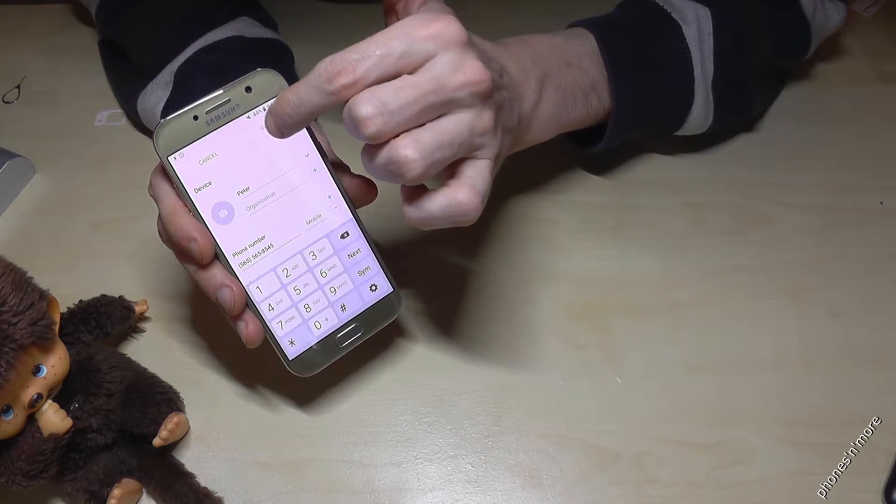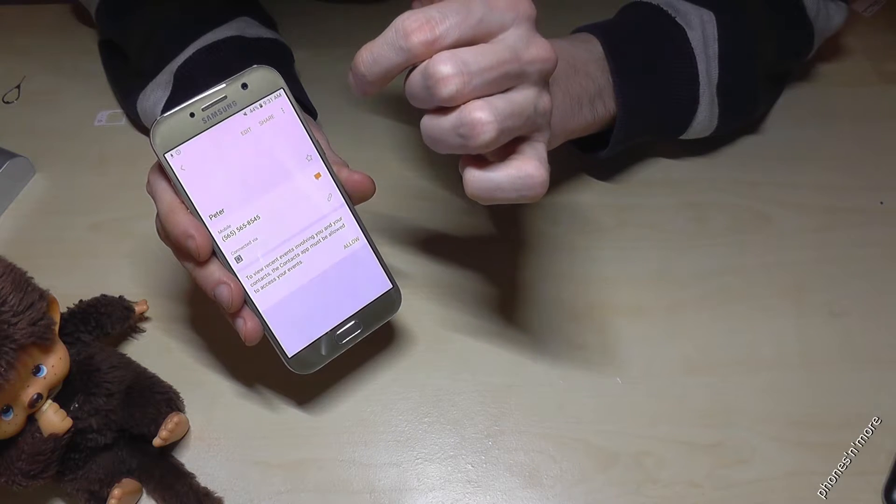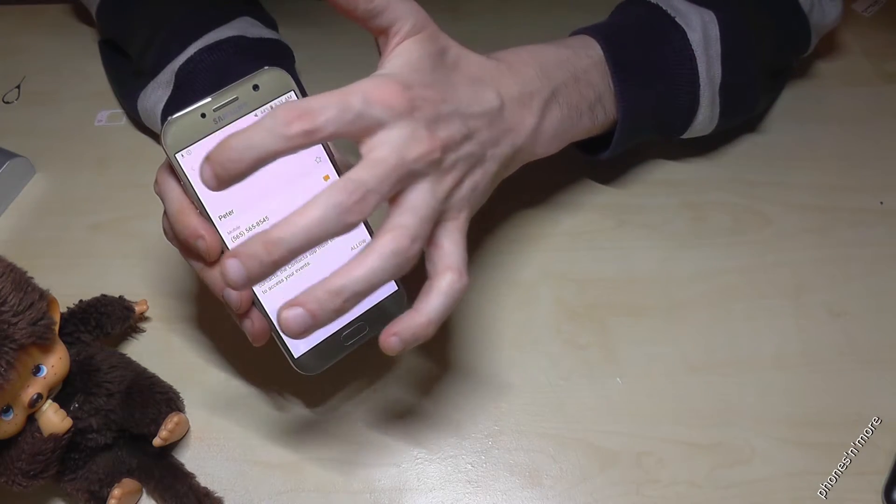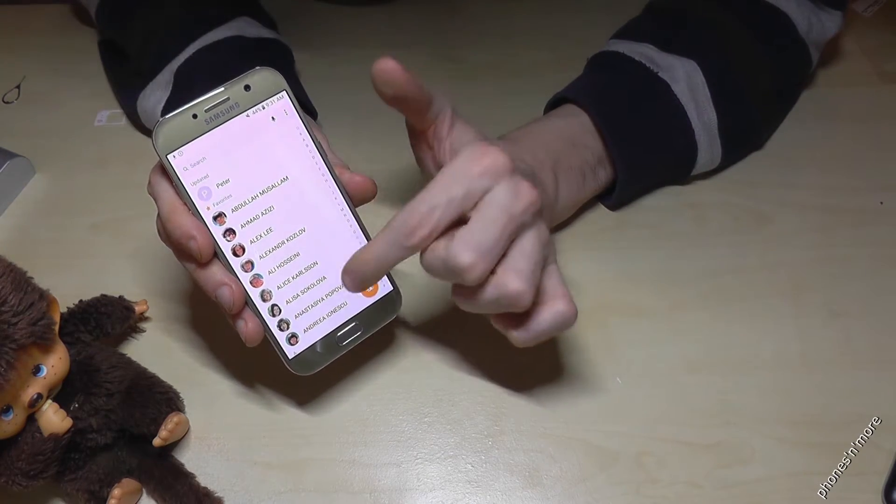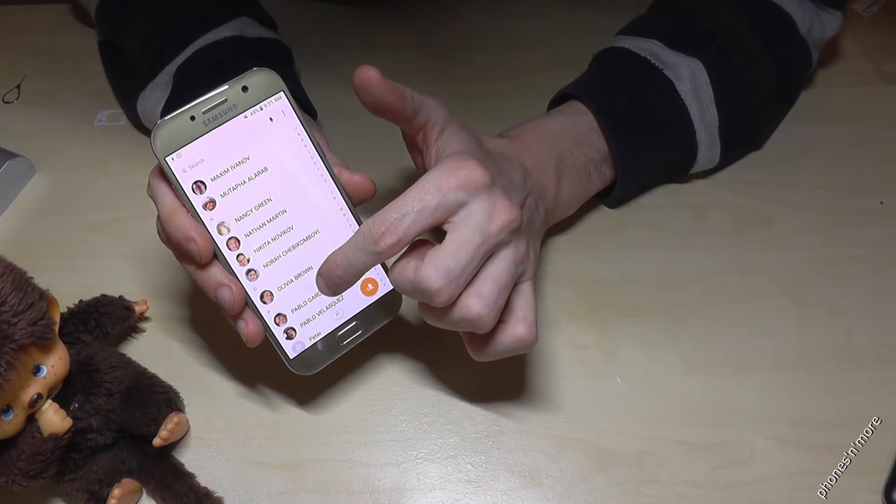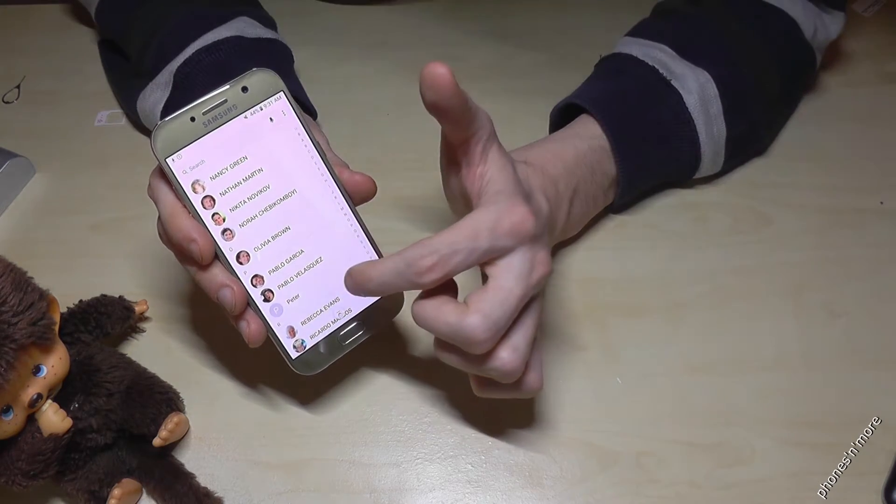After you are done, you just go on save, and Peter is there. If you go back to the phone book and scroll down now to the P, then you will see Peter is there.